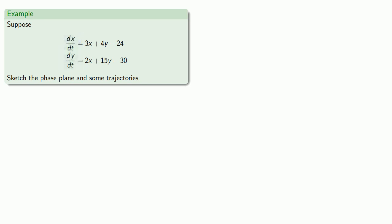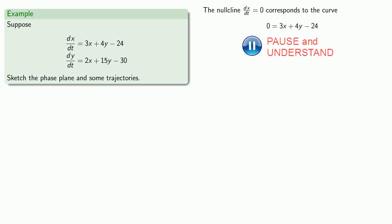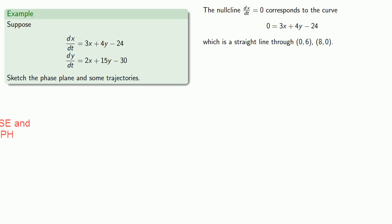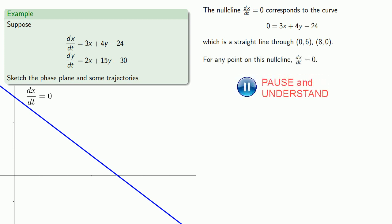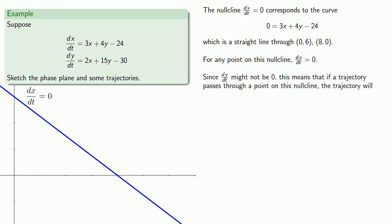Let's sketch the phase plane and some of the trajectories. We'll find our null clines. The null clines are where the derivative is equal to zero. Here there are actually two derivatives. The null cline where dx/dt equals zero corresponds to the curve 0 = 3x + 4y − 24, which is a straight line through the points (0, 6) and (8, 0). For any point on this null cline, dx/dt equals zero. Since dy/dt might not be equal to zero, if a trajectory passes through a point on this null cline, the trajectory will have some vertical component but no horizontal component.